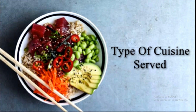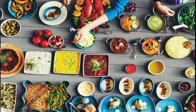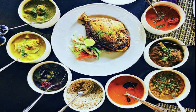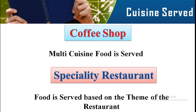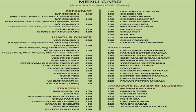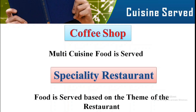The fourth parameter is cuisine. Cuisine refers to the kind of food or regional specialty served. A coffee shop is basically a multi-cuisine restaurant — the menu includes different kinds of dishes from different parts of the world: Indian, Continental, Chinese, Italian, and combo meals as well.